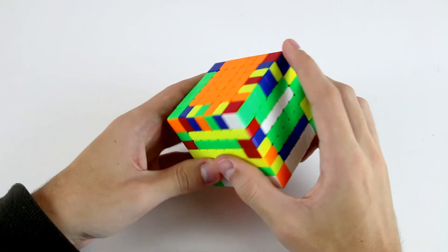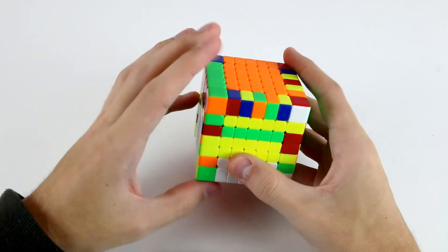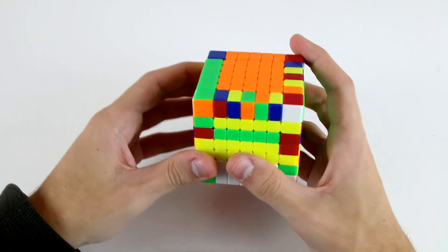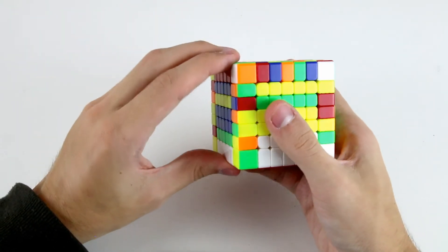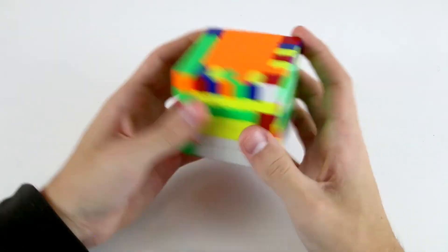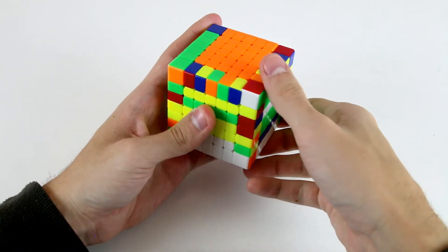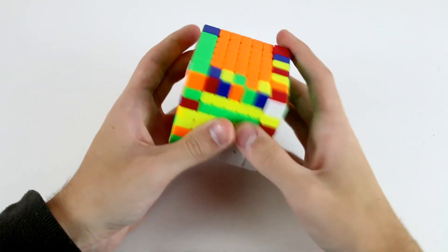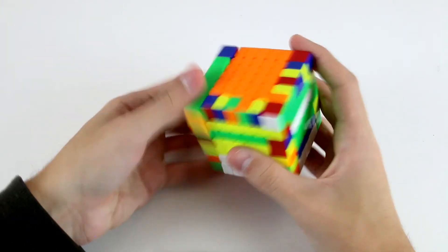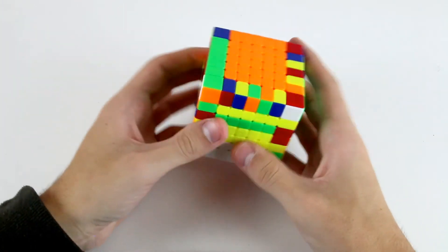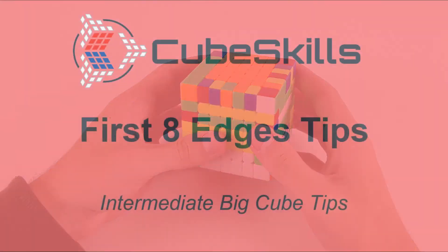Again, something I mentioned in the 5x5 tutorials but it's definitely relevant for free slice on 6x6 and 7x7, is being able to insert edges into both the left slot, the right slot, the two front slots, as well as insert edges into the back right slot and, if you're up for it, even in the back left slot.